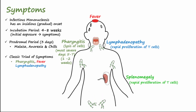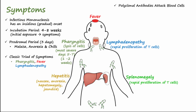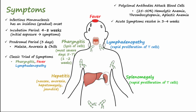Some patients develop hepatitis, which is characterized by nausea, anorexia, hepatomegaly, and jaundice. Liver issues typically resolve without causing permanent damage. Some of the polyclonal antibodies released from B cells attack blood cells. 25 to 50 percent of patients demonstrate hemolytic anemia, thrombocytopenia, and aplastic anemia, but all of these tend to be mild. Acute symptoms generally resolve in three to four weeks, but cervical adenopathy and lethargy may persist for two to three months or longer.